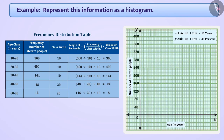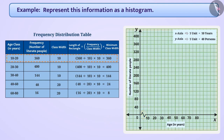Since we are starting with 10 on the x-axis, we will make a kink symbol indicating that we are not showing numbers from 0 to 10. Now we will draw the rectangle by keeping the width of the rectangle as 10 and the length of the rectangle as 360 for the age group 10 to 20.